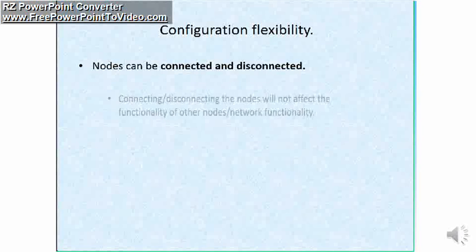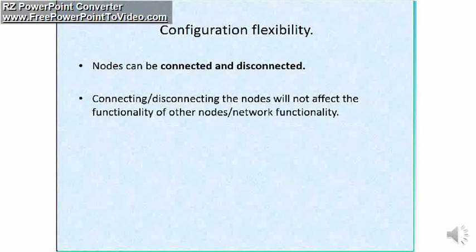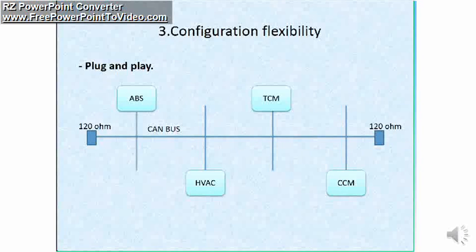The next property of CAN protocol is configuration flexibility. What does it mean? The flexibility means in a CAN network, connecting and disconnecting the nodes from a network will not affect the functionality of the network. That means nodes can be connected and disconnected at any point of time. So let's see with the animated example here. I would like to use the word plug and play.